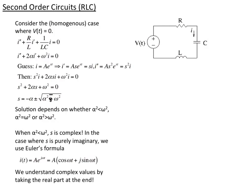In these solutions, if we have an imaginary current, what we do is go through the whole calculation and just take the real part at the end. In this case, we just take the cosine part and ignore the sine part.